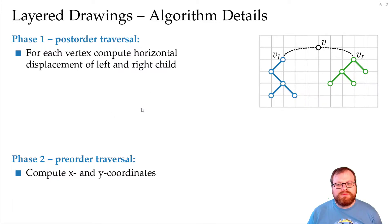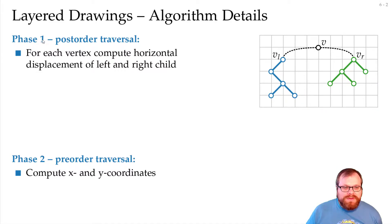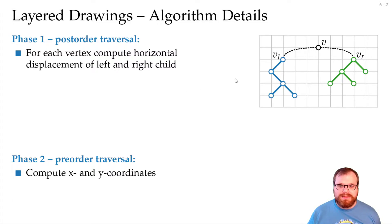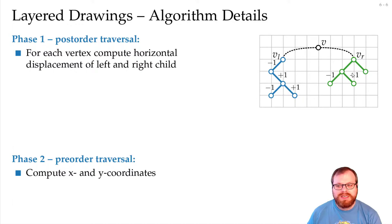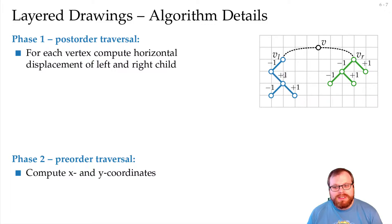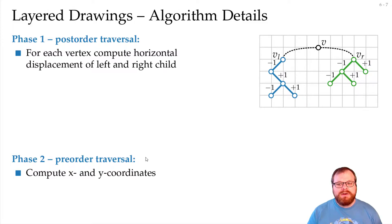In the post-order traversal, we prepare for this computation and collect a lot of information. In the first step of this phase, we want to compute the horizontal displacement of the left and the right child of every vertex. If we look at this vertex here, the left child goes one to the left and the right one goes one to the right — the horizontal displacement compared to the parent is minus one and plus one. With this information, we can already compute x and y coordinates, since the y coordinates come from the depth, and with the displacement we know exactly where to place the vertices.